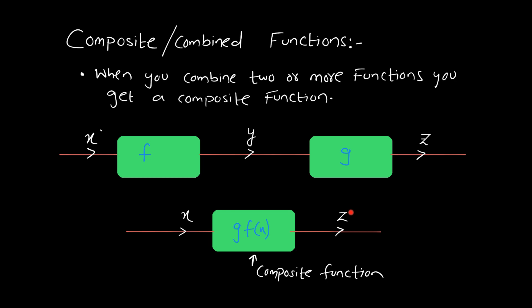If you can come up with one function that takes the value of x and directly gives you the final output z, such a function is known as a composite function. So g∘f(x) is a composite function because it takes function f's output as the input to function g.